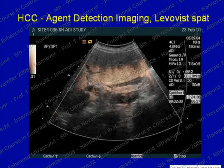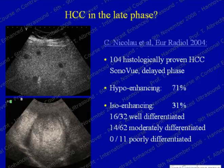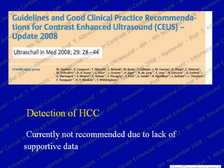In a very nice study by Dr. Nicolaou of 104 histologically proven HCCs, 70% washed out but 31 were iso-enhancing in the delayed phase. Looking at those 31, this was predominantly in well-differentiated HCC and never the case in poorly-differentiated tumors, so it has something to do with the degree of differentiation. Due to these limitations, the current and previous versions of the EFSM guidelines recommend not using CEUS routinely for the detection of HCC, due to a lack of supportive data and general skepticism regarding HCC detection.